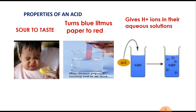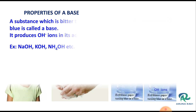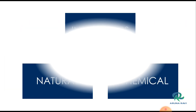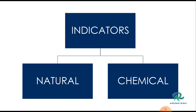Acids are sour to taste, turn blue litmus paper to red, and give H⁺ ions in their aqueous solutions. The properties of bases: bitter to taste, soapy to touch, turns red litmus to blue, and gives OH⁻ ions in their aqueous solutions. Now we shall see the indicators.